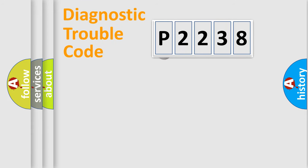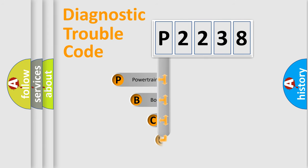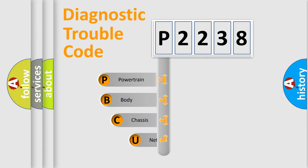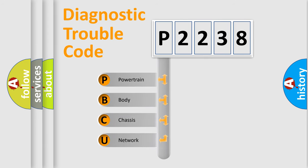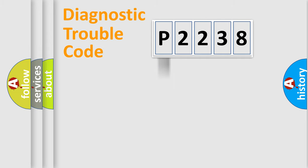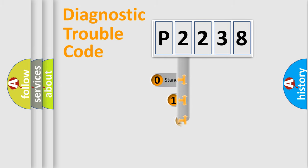First, let's look at the history of diagnostic fault code composition according to the OBD2 protocol, which is unified for all automakers since 2000. We divide the electric system of the automobile into four basic units: Powertrain, Body, Chassis, and Network. This distribution is defined in the first character of the code.